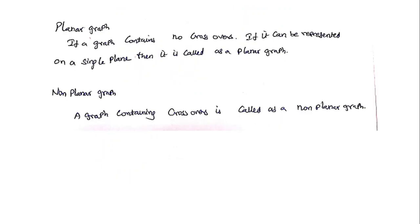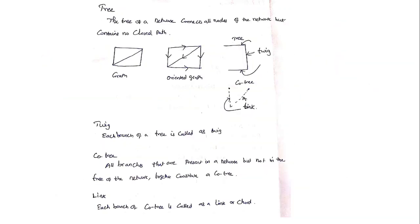Next is the tree. The tree of a network connects all the nodes of a network but contains no closed path. The tree is drawn from the graph. I need to connect all the nodes but there should not be any closed path — that is called a tree. For example, if I have n nodes, the number of branches needed to connect all nodes is n-1. Based on the number of nodes, the number of branches in the tree is decided.